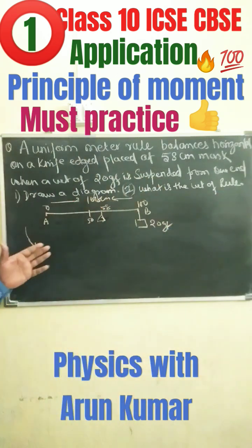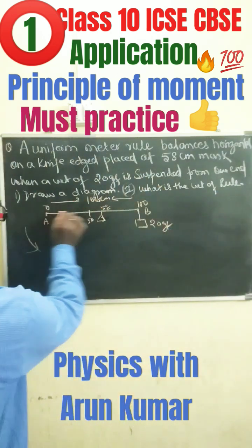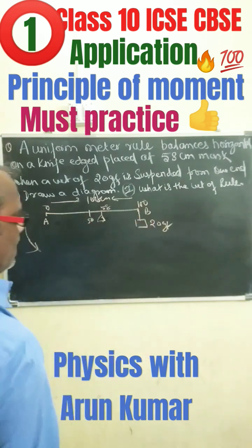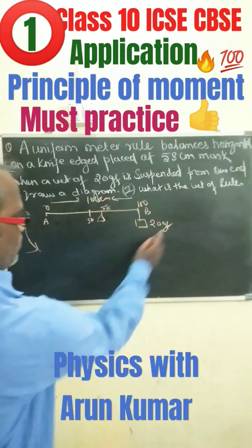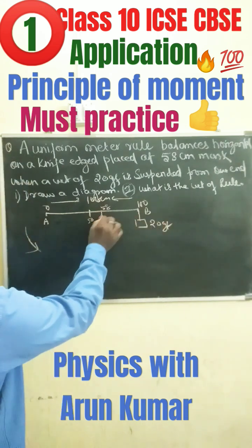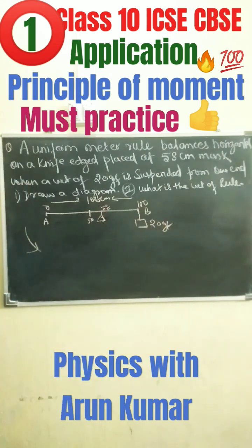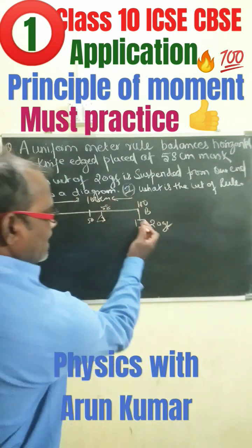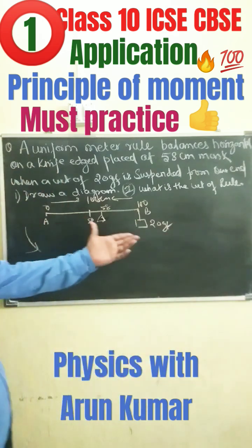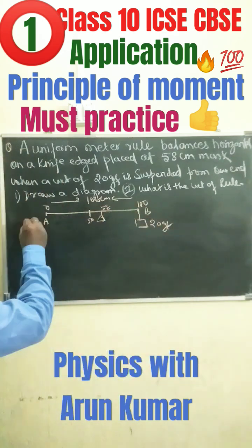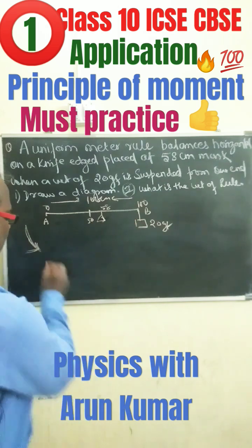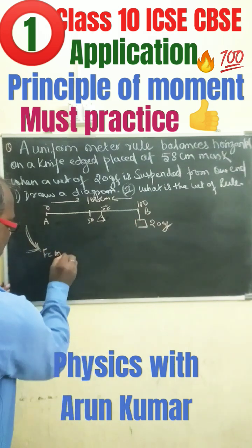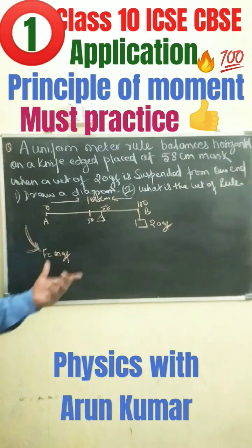In the second part, they have asked what is the weight of the ruler. This is a uniform meter scale, so it should actually balance at 50 cm, but due to this weight it has been kept at 58 cm and balanced. We will suppose — let this weight be taken out — then with what force will it act in the anti-clockwise direction. Let the weight of the rule be Mgf.